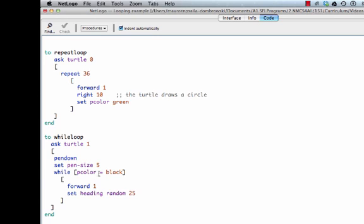And we're going to say, while the p color underneath this turtle is black, move forward one step and set the heading to random 25. Let's take a look.